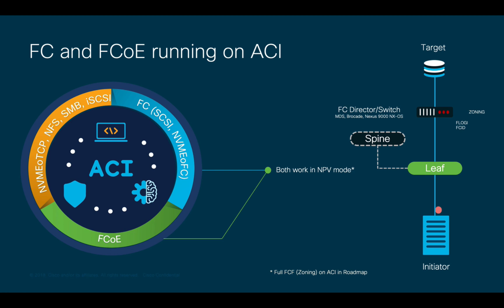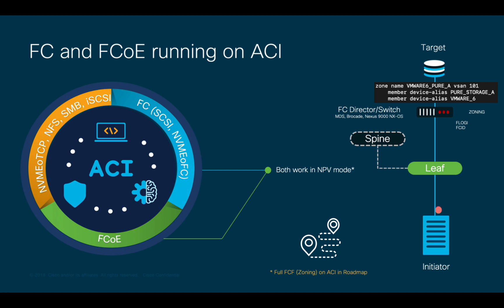The important thing here is that zoning, which allows initiators to talk to targets, must be defined in the external Fiber Channel director, since ACI does not support zoning as of version 5.2. Full Fiber Channel forwarding functionality and zoning on ACI will be available in a future release, so stay tuned.